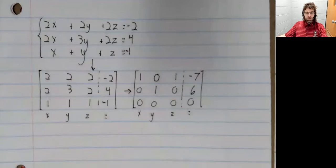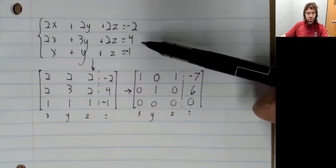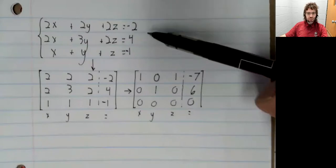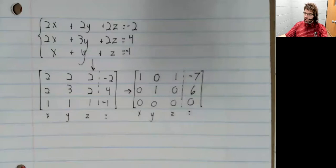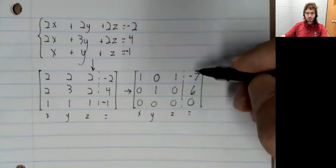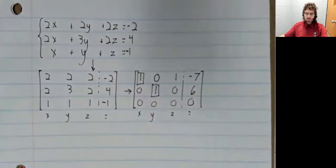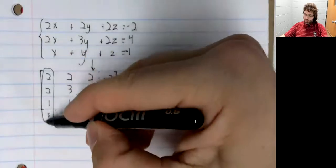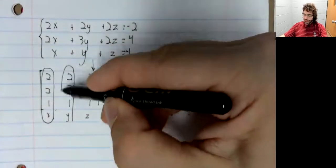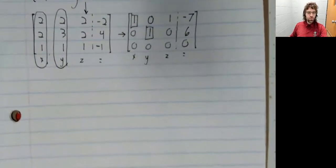There is a free variable. Well, first of all, there are solutions. We should start by making that observation, because this is non-homogeneous. There is no guarantee that solutions exist. Solutions exist as long as the last column is not a pivot column, though. And that's true. The pivot columns are the first column and the second column. So solutions do exist.